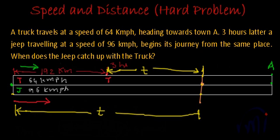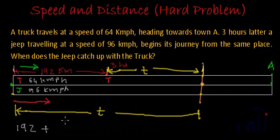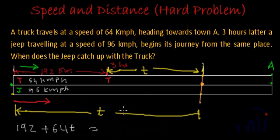So how do we solve this problem? Let's find the total distance travelled by the truck from the starting point to the meeting point. That is 192 — the distance travelled by the truck before the jeep started — plus the distance travelled in t hours at the speed of 64 km per hour, which is 64t. And the distance travelled by the jeep in t hours will be its speed of 96 km per hour multiplied by the time t hours, so 96t.